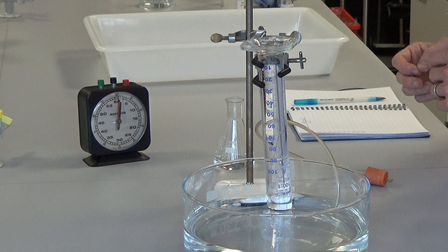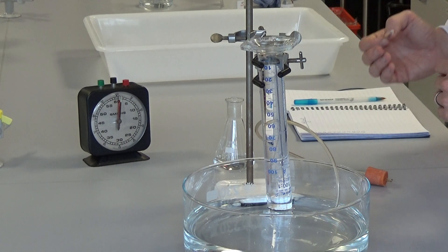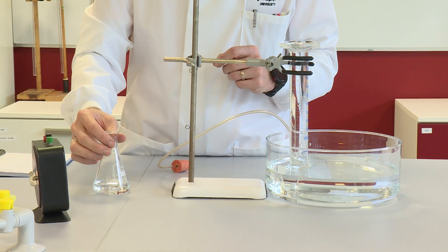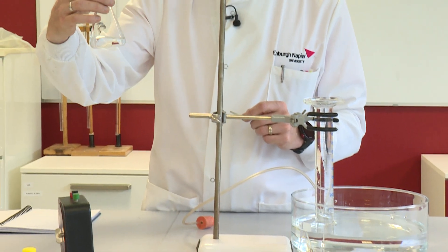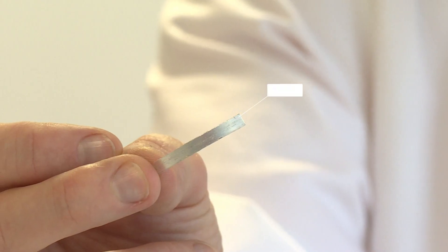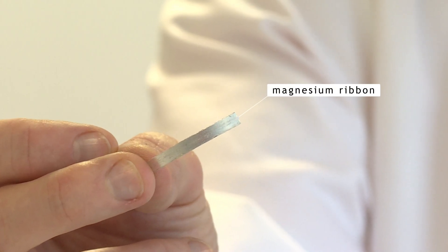We're doing this reaction here so that we can calculate the average rate of the reaction between magnesium and hydrochloric acid. In the conical flask, I've got 50 centimetre cubes of one mole per litre hydrochloric acid solution and here we've got some magnesium ribbon.